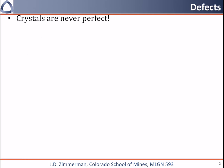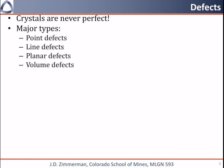First, I want to categorize defects, and we typically categorize them based on the dimensionality of the defect. So we have point defects, which are zero dimensional, line defects, planar defects, and finally the three-dimensional volume defects.